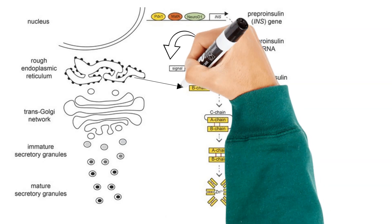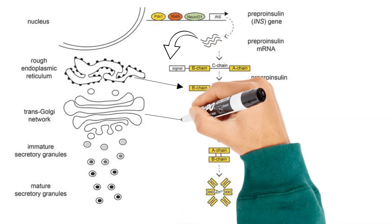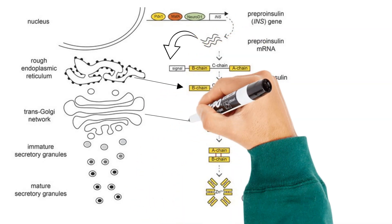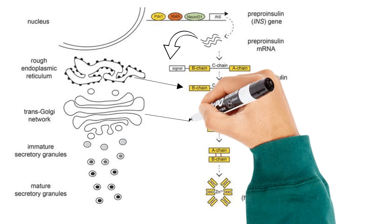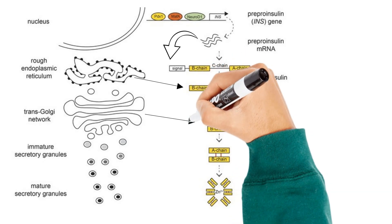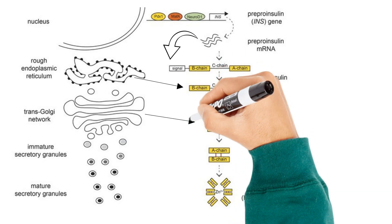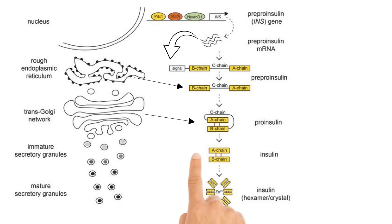Pro-insulin has three domains consisting of an amino terminal B-chain, a carboxyl terminal A-chain, and a connecting peptide in the middle known as the C-peptide.